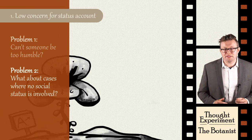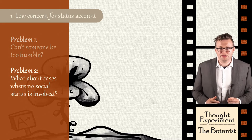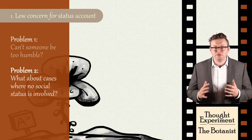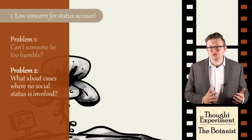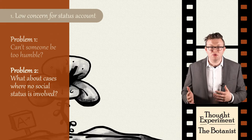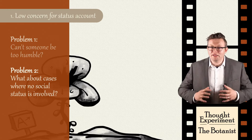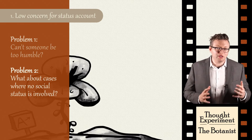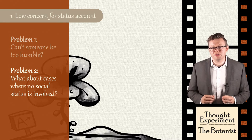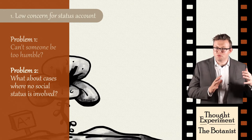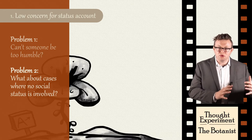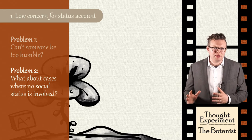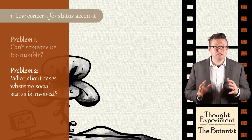Now, there's another worry facing the low concern for status account that arises when we consider scenarios where there's no social status to be had or cared about. While intellectual humility plausibly has an important social dimension, the Roberts-and-Wood view — the low concern for status view — seems to make a social context absolutely essential.